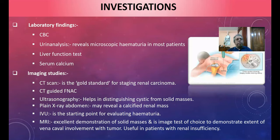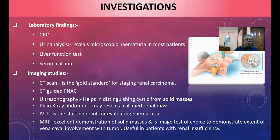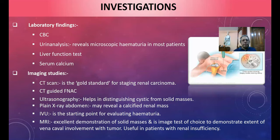Investigations include: complete blood count — check hemoglobin; urine analysis, which reveals microscopic hematuria in most cases; liver function tests to exclude metastasis; serum calcium levels; and urine cytology — collect urine for 24 hours, centrifuge, and examine the sediment for malignant cells. CT scan is the gold standard for staging of renal carcinoma.